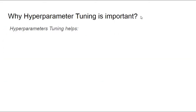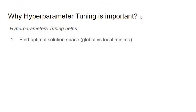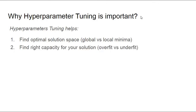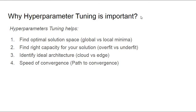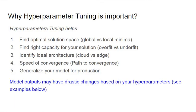Why is hyperparameter tuning important? You have to find an optimal solution, and hyperparameters are the key. In general, you will be in a space where there are many local minima, and your interest is to find the global minimum. When you want to find the right capacity for your solution, hyperparameter tuning is very important — this is where you're optimizing between overfit versus underfit. When you want to find ideal architectures, architectures for cloud will be different from architectures for edge computing. Your speed of convergence during training and the path of convergence are also dependent on hyperparameters. Finally, when you want to generalize models for production, you want to regularize those parameters, and hyperparameters are important for that. The model outputs will have a drastic change based on how you choose your hyperparameters.